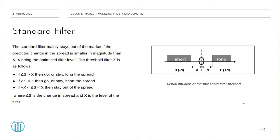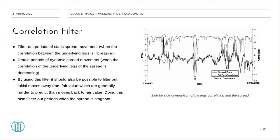Correlation filter. The idea here is to enable the trader to filter out periods of static spread movement and retain periods of dynamic spread movement. By using this filter, it should also be possible to filter out initial moves away from fair value, which are generally harder to predict than moves back to fair value. Doing so also filters out periods when the spread is stagnant.